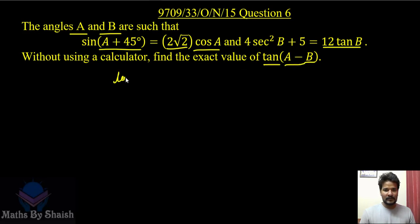First of all, let us see what is tan(A - B). From the identity, we can get the identity from the formula booklet. It is tan A minus tan B over 1 plus tan A into tan B. Here we have only tan A and tan B required to get this value.